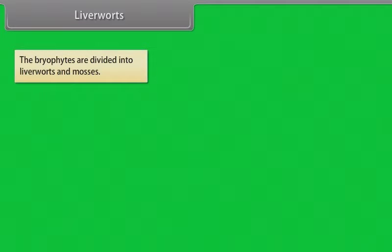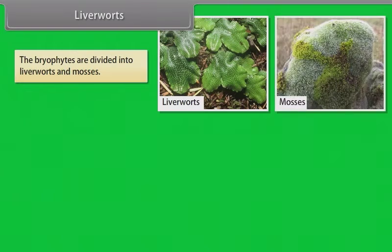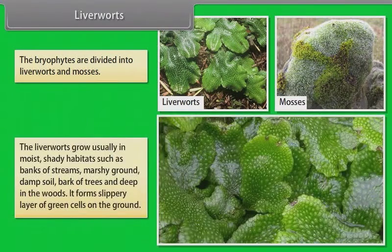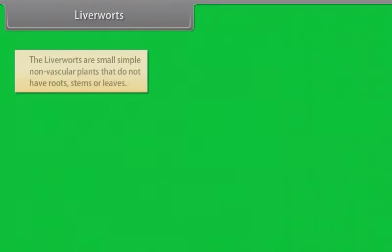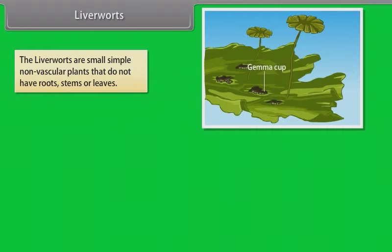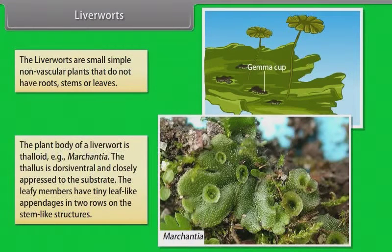The bryophytes are divided into liverworts and mosses. The liverworts grow usually in moist shady habitats such as banks of streams, marshy ground, damp soil, bark of trees, and deep in the woods. It forms slippery layer of green cells on the ground. The liverworts are small, simple, non-vascular plants that do not have roots, stems, or leaves. The plant body of a liverwort is thalloid, example Marchantia. The thallus is dorsiventral and closely appressed to the substrate. The leafy members have tiny leaf-like appendages in two rows on the stem-like structures.